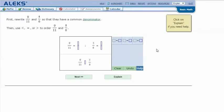Here's an example problem. First, rewrite 9/11 and 5/6 so that they have a common denominator. Then use less than, equal to, or greater than to order 9/11 and 5/6.